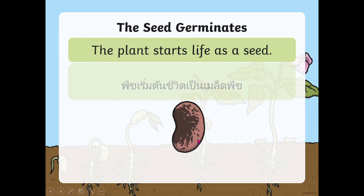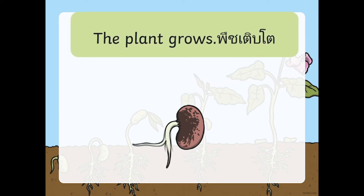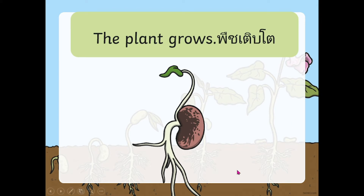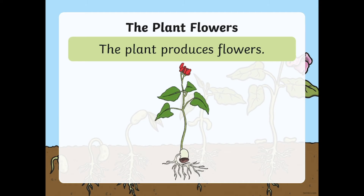The plant starts life as a seed. Next, the plant grows. Then the plant flowers — the plant produces flowers. Look at these flowers.